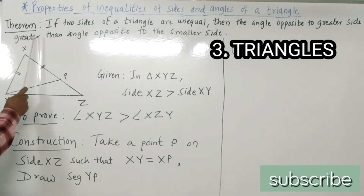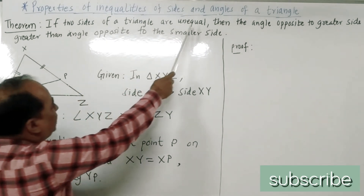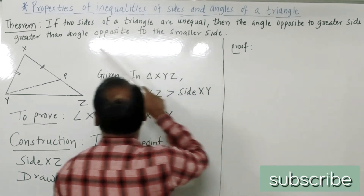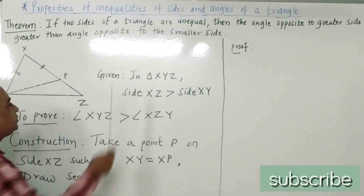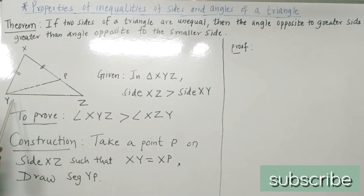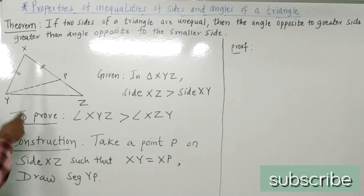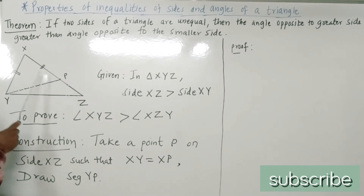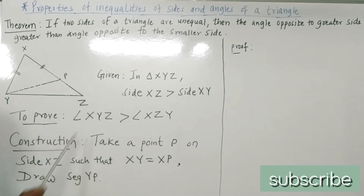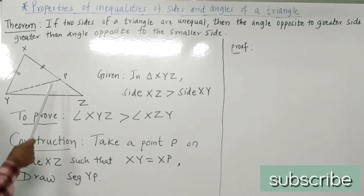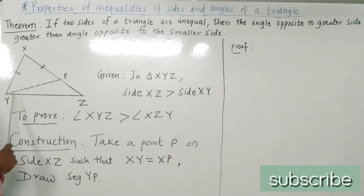The first theorem: if two sides of a triangle are unequal, then the angle opposite to the greater side is greater than the angle opposite to the smaller side. Let us consider triangle XYZ. In triangle XYZ, the greater side XZ is greater than XY — this is given. We have to prove that the angle opposite to the greater side, angle XYZ, is greater than angle XZY. Construction: take a point P on side XZ such that XY is equal to XP, and join YP.